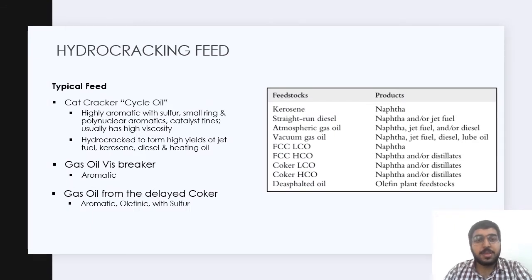After the previous discussions, now we know what is hydrocracking process and what is happening at the molecular level. Now let's talk about the hydrocracking feed. What do typical feeds look like from a catalytic cracker? It's cycloid, highly aromatic with sulfur, small ring and polynuclear aromatics. It contains catalyst fines and usually has very high viscosity. It's hydrocracked to form high yields of jet fuel, kerosene, diesel and heating oil. Next is gas oil waste breaker, which is aromatic but doesn't contain any sulfur and is not olefinic. The gas oil from the delayed coker is aromatic, is olefinic and contains sulfur.